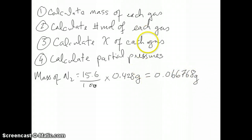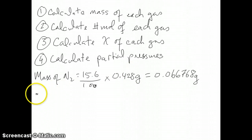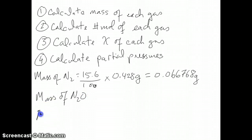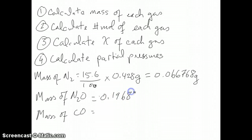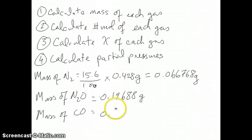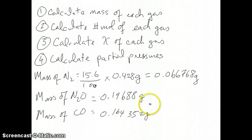I'm carrying out to quite a few decimal places here because it's always good practice to do all your calculations with full precision and only round at the last step. You can do the same calculation with the other gases — N2O and carbon monoxide. For the mass of N2O you should get 0.19688 grams, and for the mass of carbon monoxide you should get 0.164352 grams.